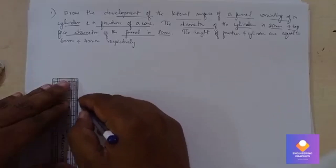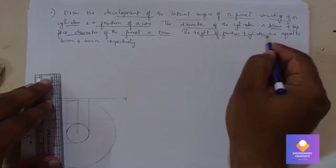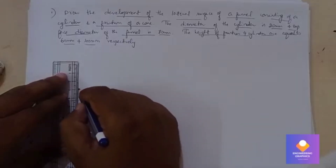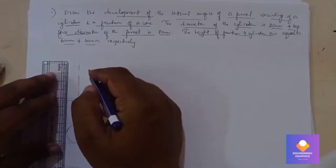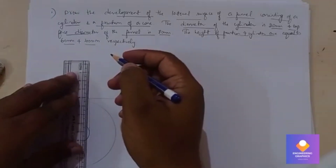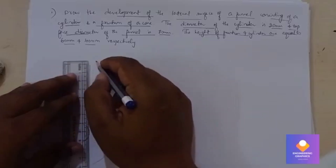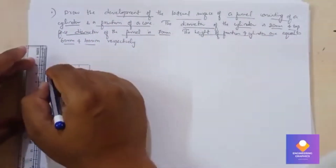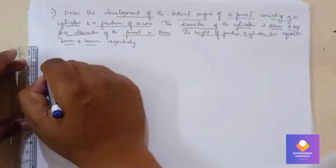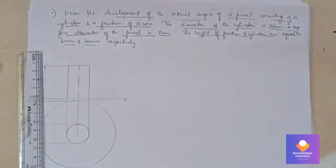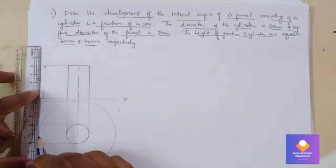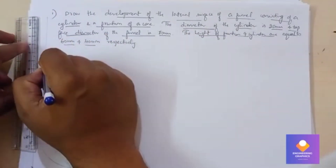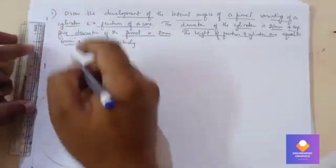From the center point I will draw an axis. The height of the frustum and cylinder are given as 60 and 40 mm. Cylinder height is 40 mm. You can mention the dimension 40. We need to project the projections from the funnel also. It has to be exactly at a height of 60 mm because the front view of the funnel is exactly equal to 60. Now I am going to project it till there.